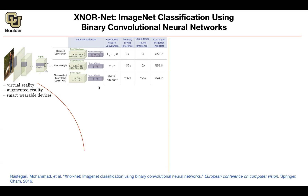What are the applications? This is going to have applications in virtual reality, augmented reality, and smart wearable devices, because these networks are really small. Now let's see the math. Our input has C channels and resolution W_in × H_in. Our weight for a single filter has the same number of input channels as the input tensor, with its own filter width and height — typically much smaller than the input dimensions.